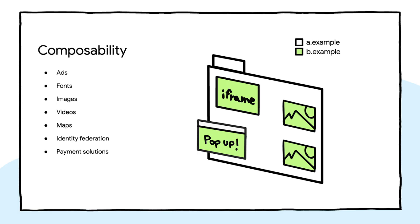Composability is a superpower of the web. You can enhance your website's capabilities by simply adding resources from different services. Commonly used services include ads, web fonts, images, videos, maps, identity federation, payment solutions, and so on. These services are quite handy and powerful, but their cross-origin nature contributes to increased risk of information leakage.